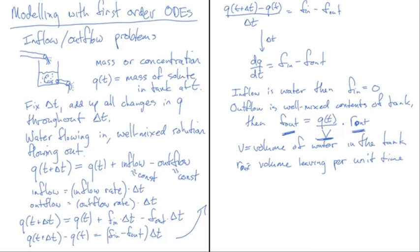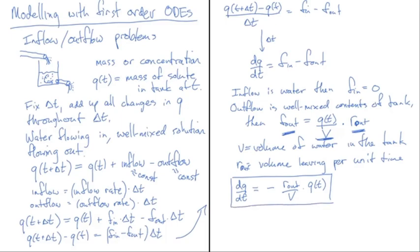So now we have dq/dt = 0 − (r_out / v) × q(t). Assuming r_out and v are constant, this is a first-order linear differential equation whose solution we can write down quickly: q(t) = q_0 × e^(−(r_out/v) × t).